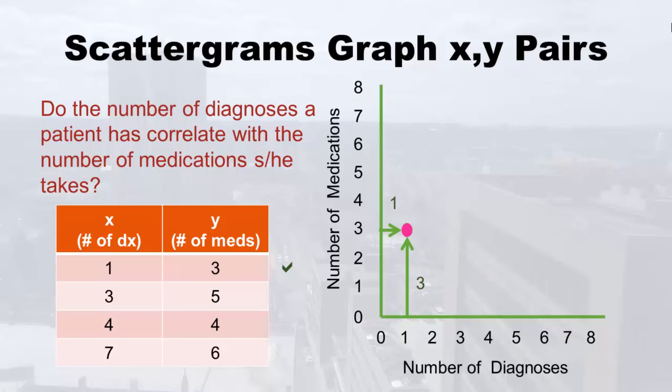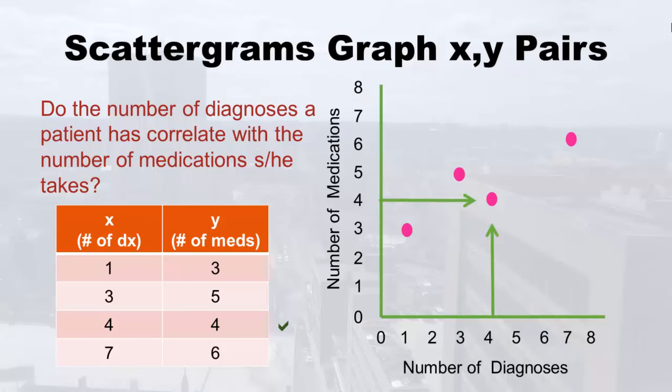I just threw all the dots down so you can see what's going on. The second person had an x of three, so I went over three. That person had a y of five — you see where the dot goes. The third dot goes at four and four. And then there's the fourth dot. This is the scattergram of these four patients — of course, a lot of times you have hundreds of patients in there.